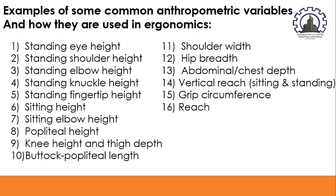The 16 anthropometric variables are: standing eye height, standing shoulder height, standing elbow height, standing knuckle height, standing fingertip height, sitting height, sitting elbow height, popliteal height, knee height and thigh depth, buttock-popliteal length, shoulder width, hip width, abdominal or chest depth, vertical reach (both sitting and standing), grip circumference, and reach. We will discuss each one by one, starting with standing eye height.